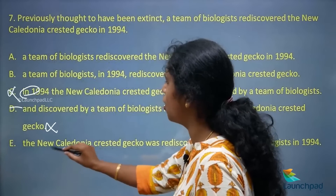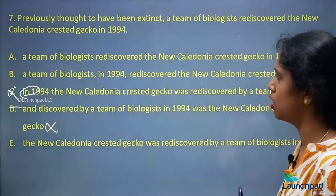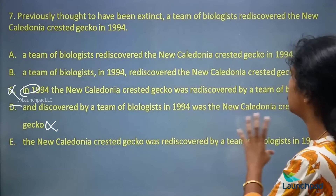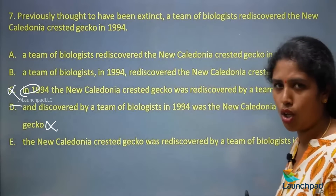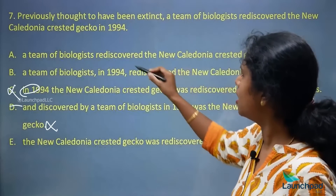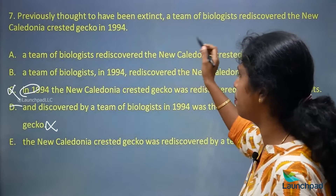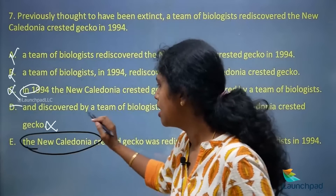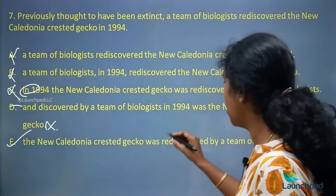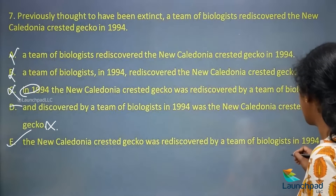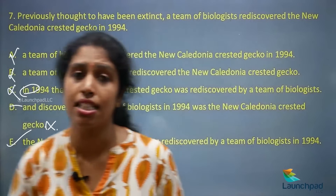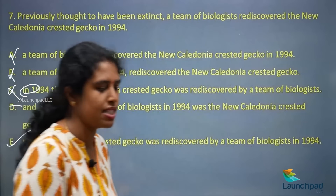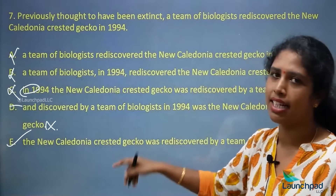It is always better to start the sentence with a noun. The proper noun here is 'the New Caledonian crested gecko.' So we can go with the option eliminating A and B: 'The New Caledonian crested gecko was rediscovered by a team of biologists in 1994.' This helps in terms of diction — the words are placed properly. Hence your option E is the right answer.